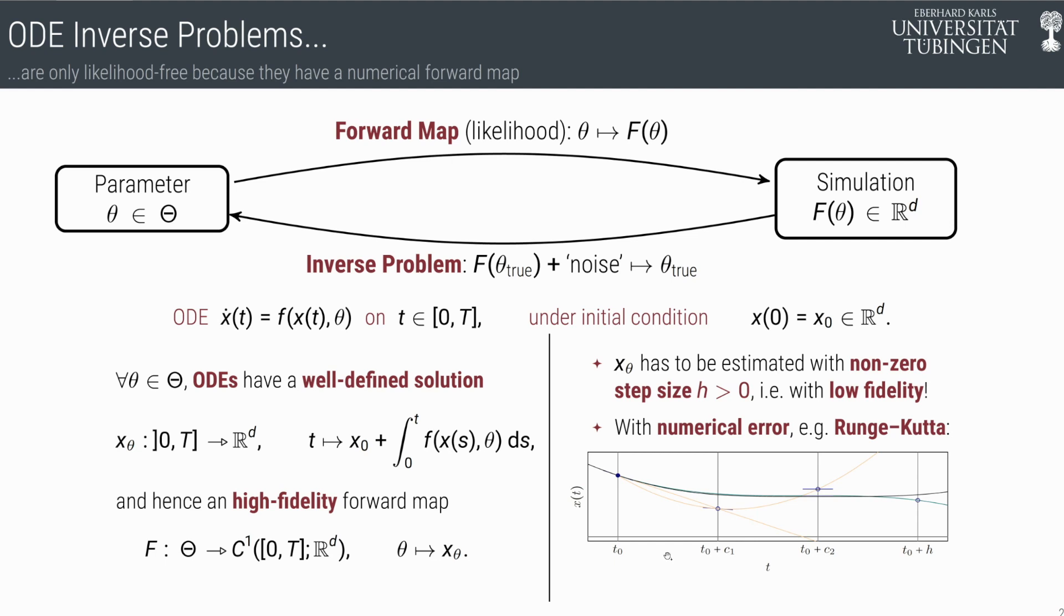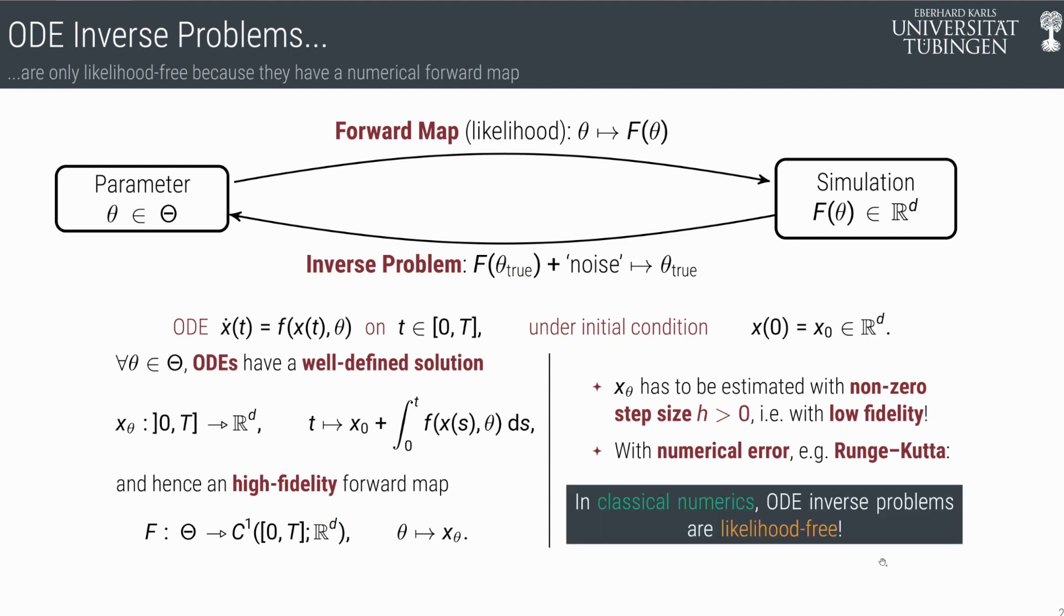The bigger your step size h, the bigger the error between the green curve and the black curve. And this is absolutely inevitable in practice.